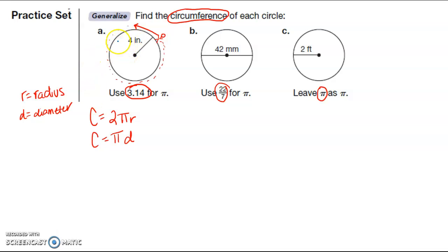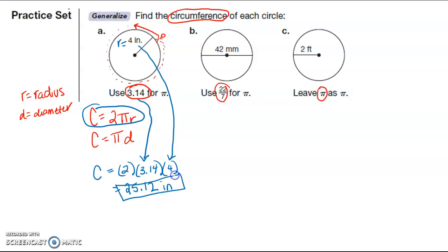In this first one, I know radius is equal to 4 because the radius goes from the center to the edge of the circle, so I'm going to use this formula. So circumference is equal to 2 times pi, which they said use 3.14, times the radius. So I have 2 times 3.14 times 4, getting my handy-dandy calculator, times 4, and I get 25.12, and that's in inches.